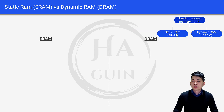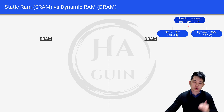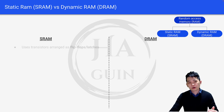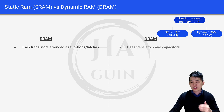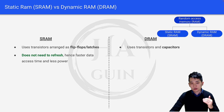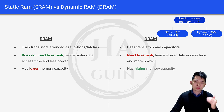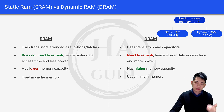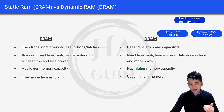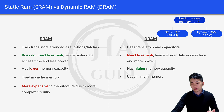Under RAM you have SRAM and DRAM. SRAM uses transistors arranged as flip-flops or latches, whereas DRAM uses transistors and capacitors. SRAM does not need to refresh, hence it has faster data access time and uses less power, whereas DRAM needs to refresh, meaning slower data access time and more power. SRAM has lower memory capacity compared to DRAM which has higher memory capacity. SRAM is used in cache memory whereas DRAM is used in main memory.